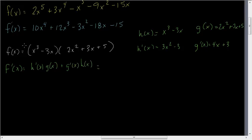If that's true, then I should be able to plug these in. And so h prime is 3x squared minus 3, times g, which is 2x squared plus 3x plus 5, plus g prime, which is 4x plus 3, times h, which is x cubed minus 3x. And now I have to expand that mess.